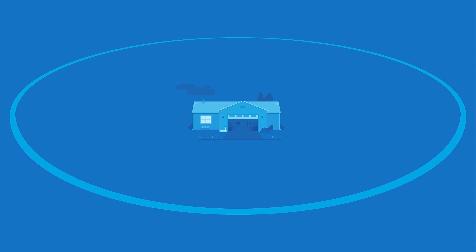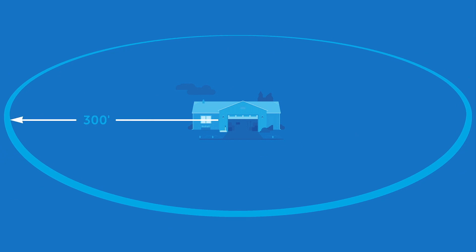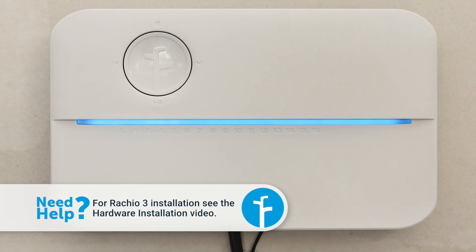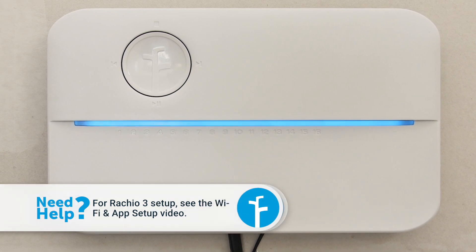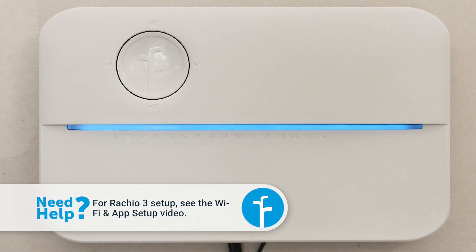Install the flow meter within 300 feet of your Rachio 3 controller. The controller needs to be installed, connected to Wi-Fi, and operating correctly before proceeding with the installation of the flow meter.